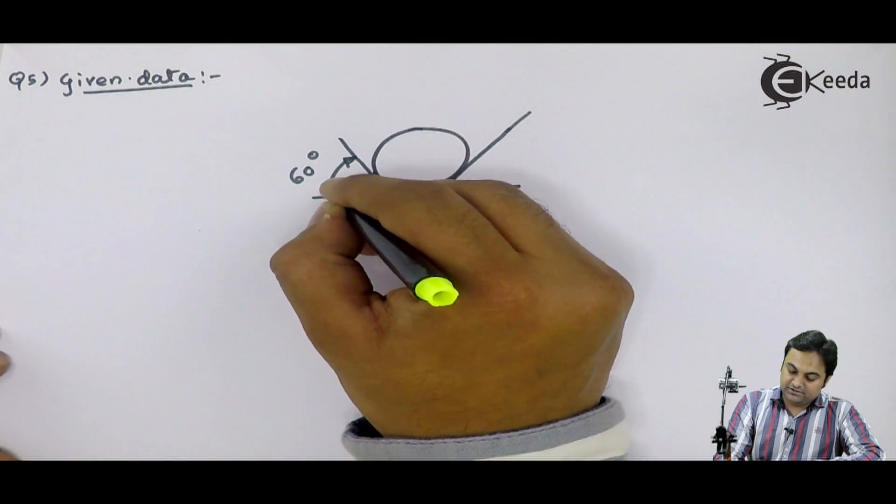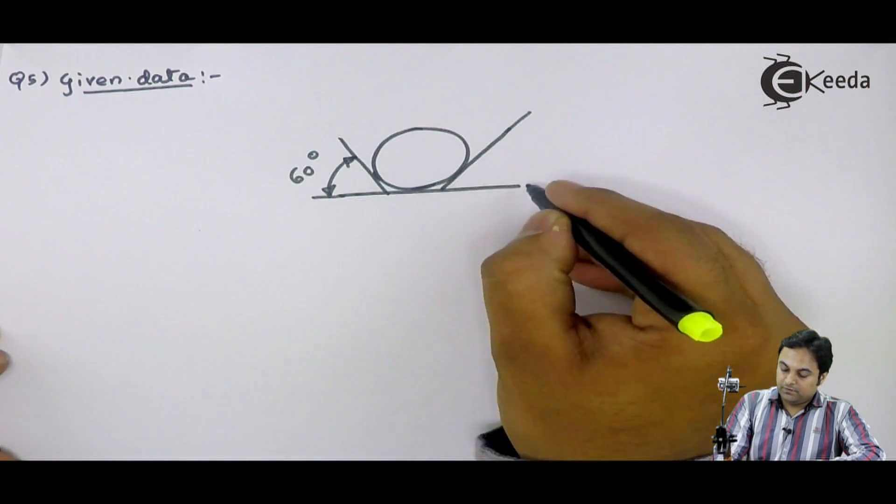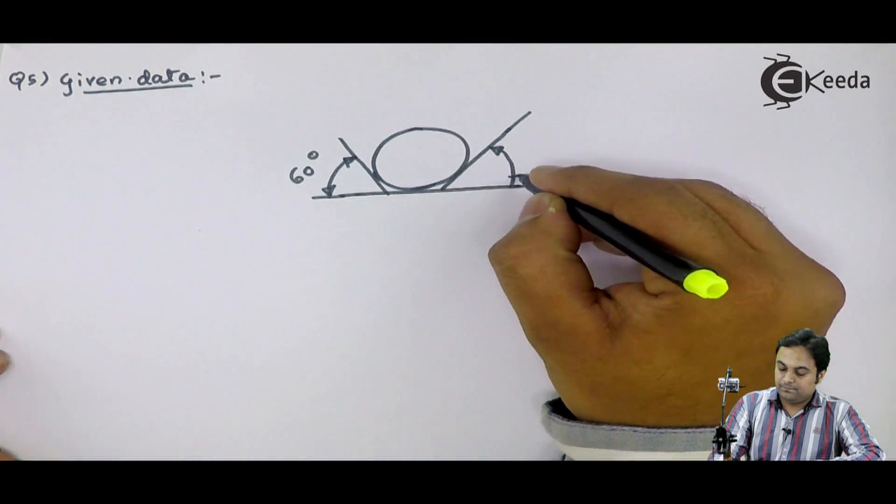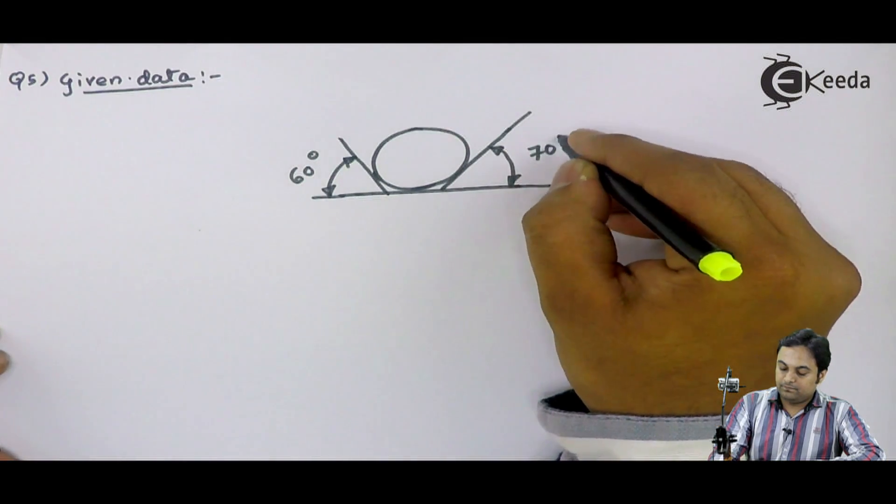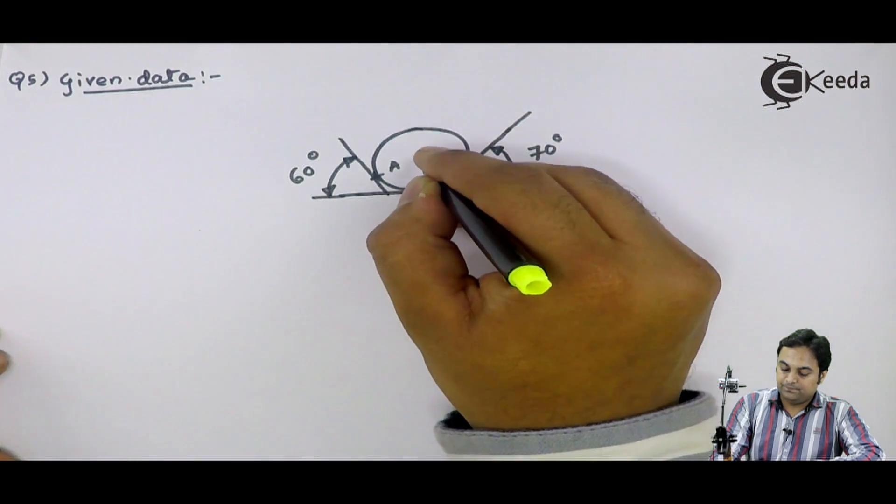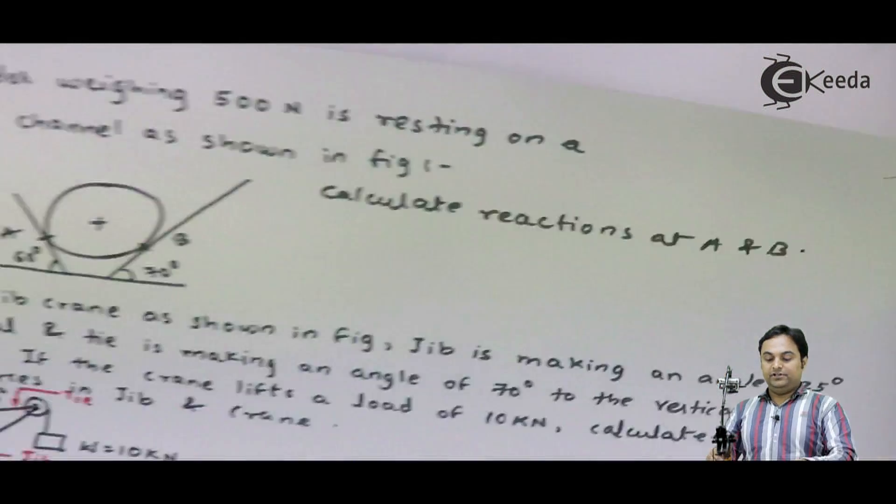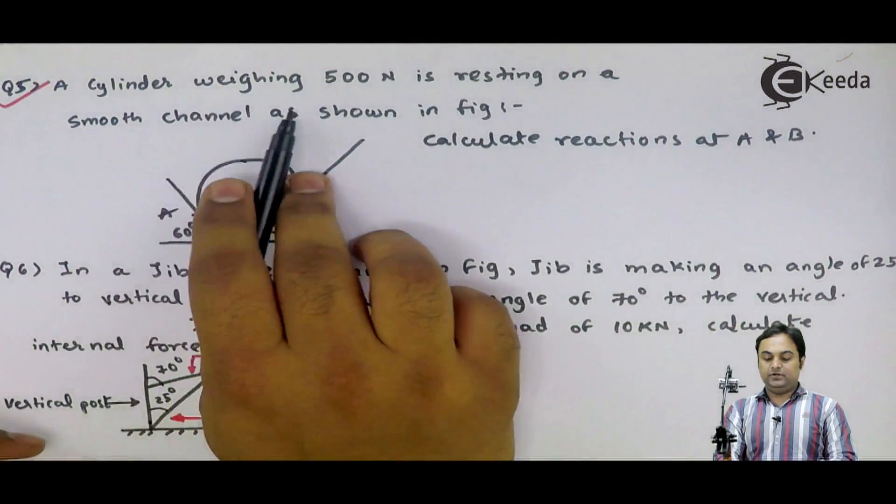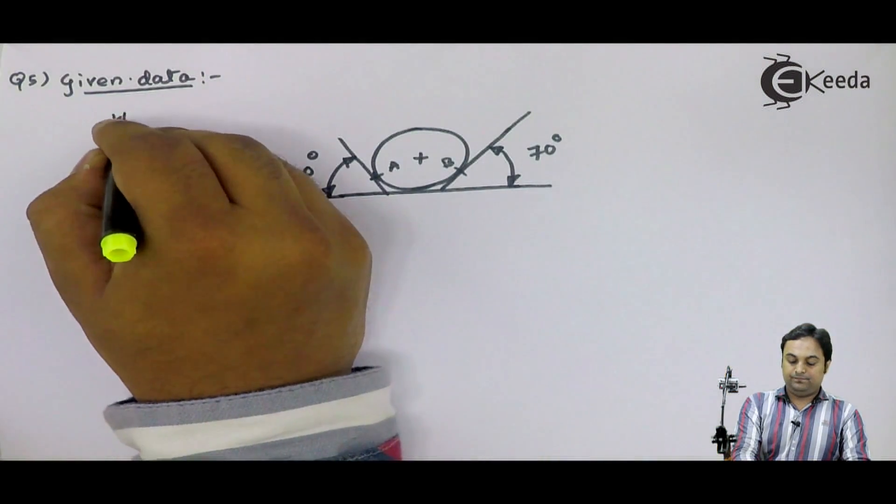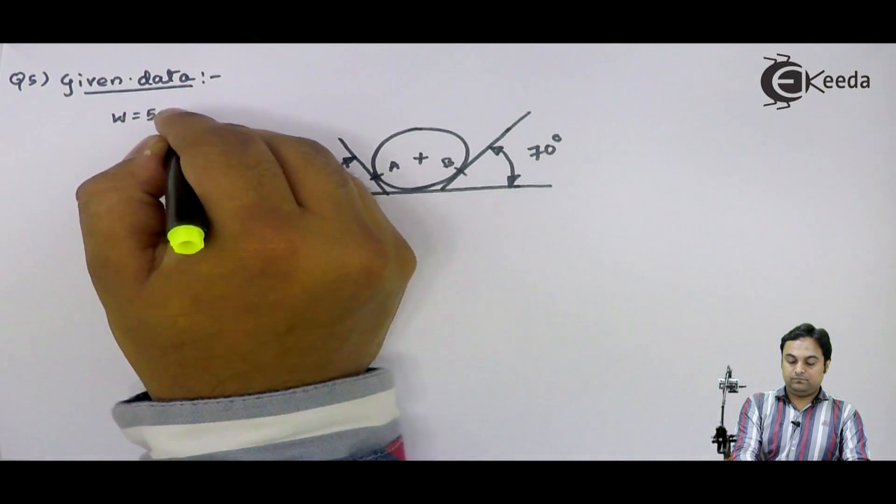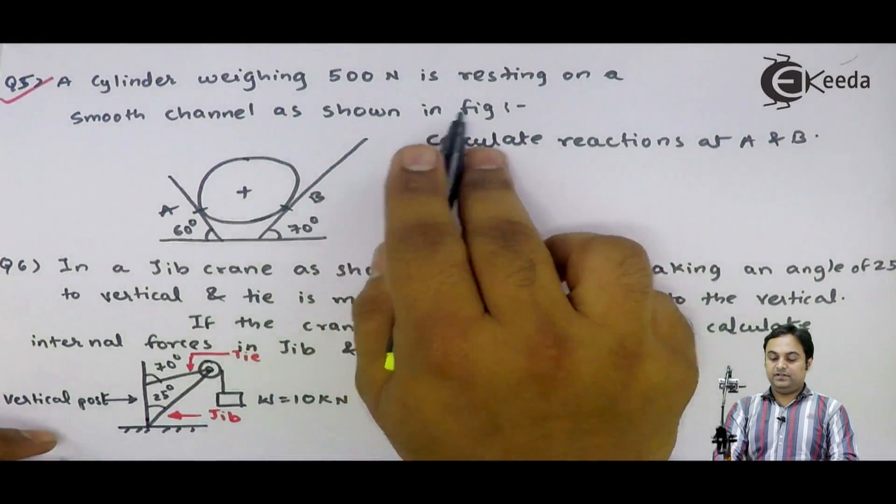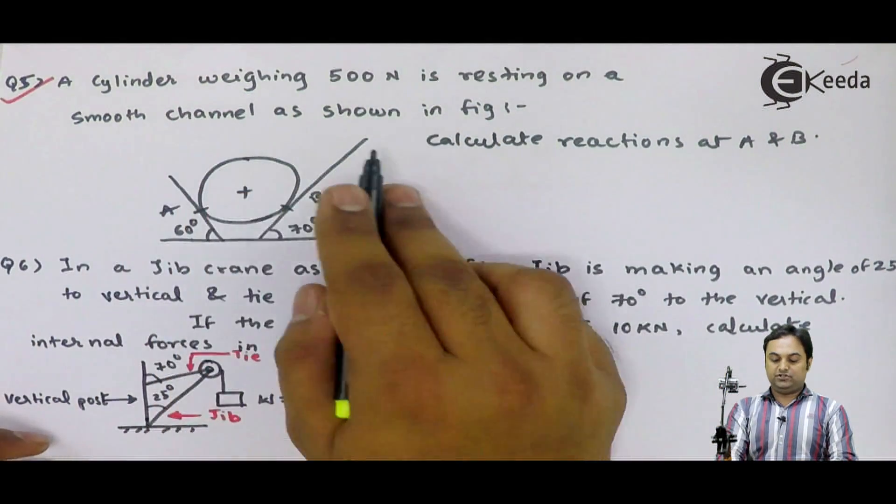One plane is inclined at 60 degree to horizontal and the other is inclined at 70 degree. Contact points are at A and at B. If we read the question, a cylinder weighing 500 Newton, weight of the cylinder is given, is resting on a smooth channel as shown in figure.